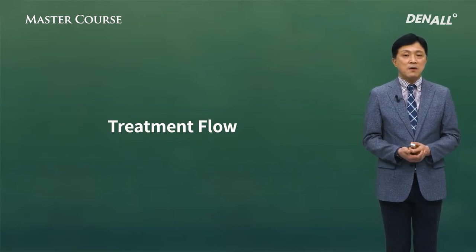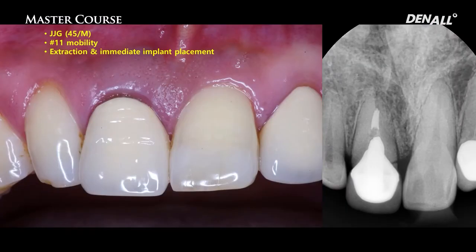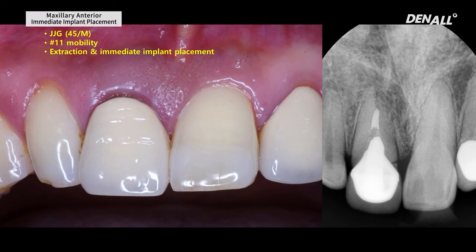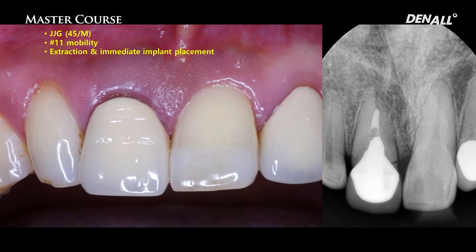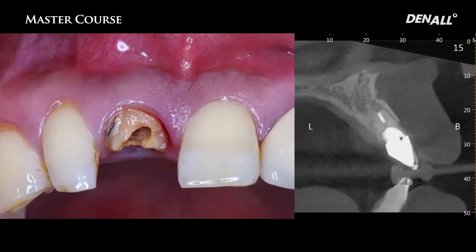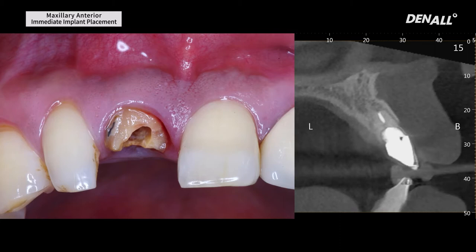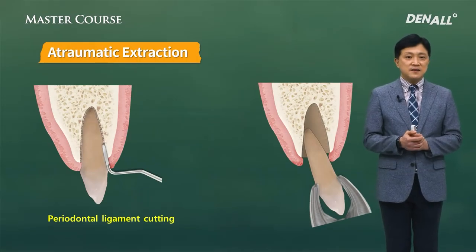Let's discuss these factors using a clinical case. This is a 45-year-old male patient. At tooth number 11, mobility is the chief complaint. Inferior to the crown, there is a crown-root fracture. Number 11 is decided to be extracted and immediate implant placement is planned. After removing the post, only the root remains. On CT, there is no lesion or bone loss — it is a sound socket. According to Allan's socket classification, it is a type 1 socket. Soft tissue support is intact and labial bone resorption has not progressed significantly.